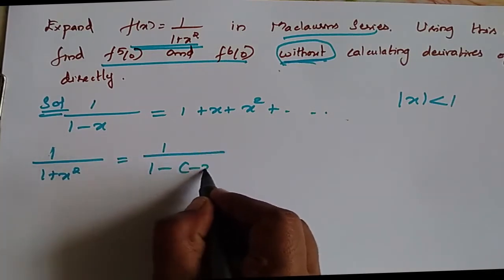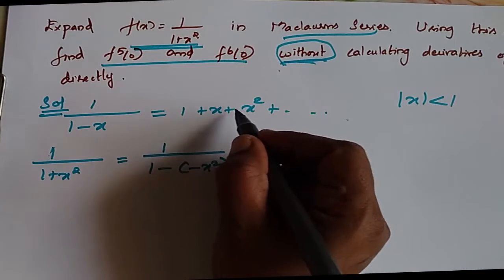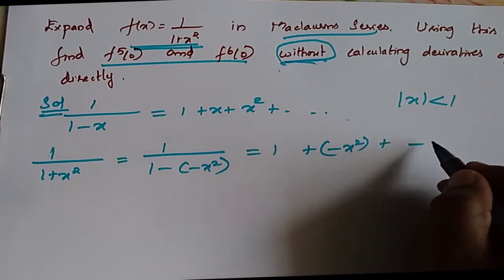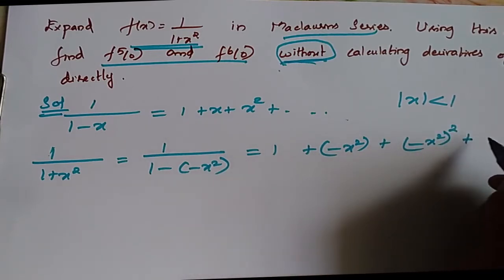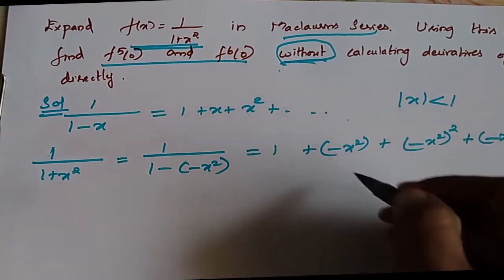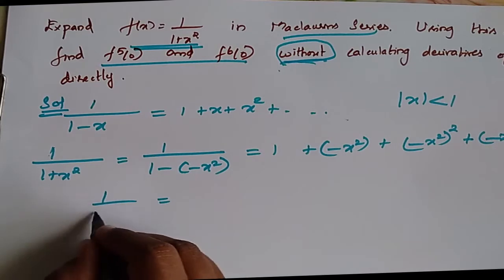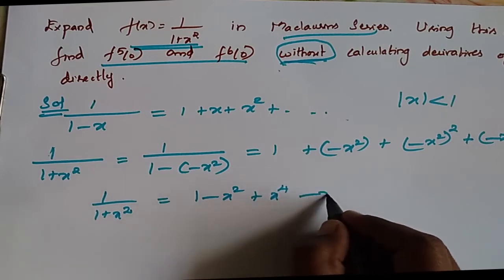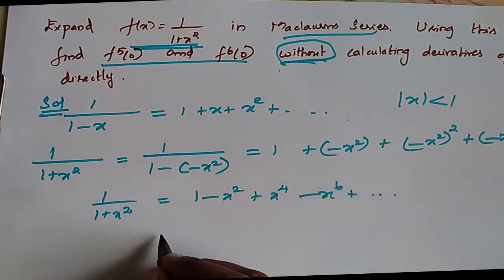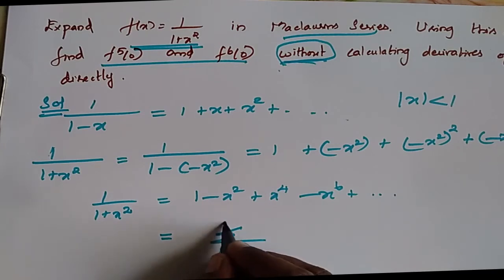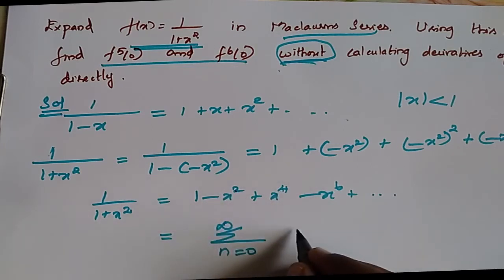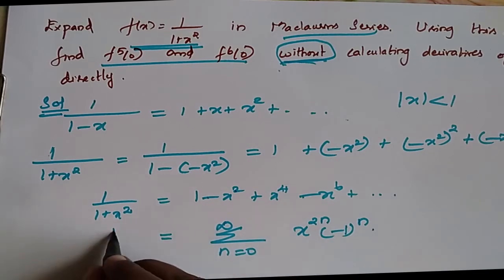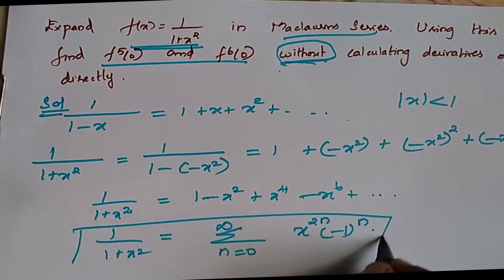We write 1/(1-(-x²)) = 1 + (-x²) + (-x²)² + (-x²)³ + ... This equals the summation from n=0 to infinity of (-1)^n · x^(2n), which is equal to 1/(1+x²), using only even powers.